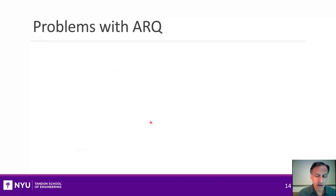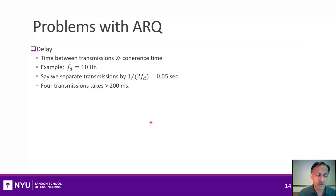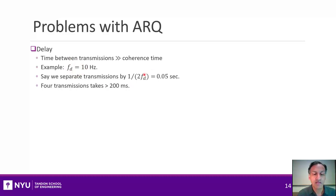But there are some caveats with ARQ. The most obvious is you introduce delay. To get independence between attempts and maximize the value of ARQ, you need the time between transmissions to exceed the coherence time of the channel. If it's a slowly varying channel — say maximum Doppler of 10 Hz — the coherence time would be about 50 milliseconds. So for four transmissions, you would introduce about 200 milliseconds of delay. If the Doppler is even slower, you'll introduce even greater delay.